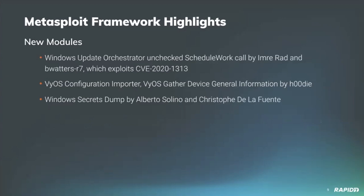Community member Hoody has contributed new auxiliary and post modules for VIOS which allow you to pull out usernames, passwords, Wi-Fi credentials, host details, and more. Our very own Christophe Delafronte has added a new module for dumping SAM hashes and LSA secrets — this is a port of the impacket secretsdump utility script — and we'll see a demo of this functionality later as well.